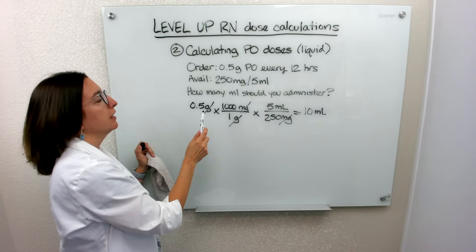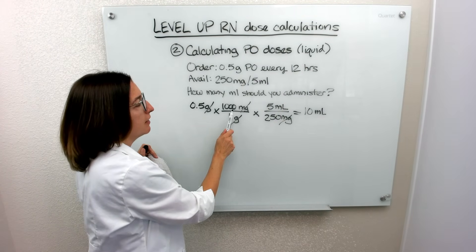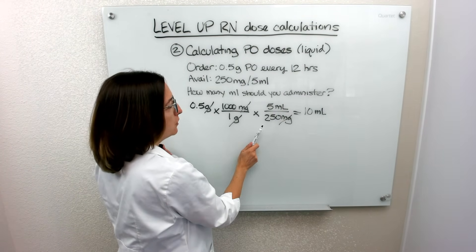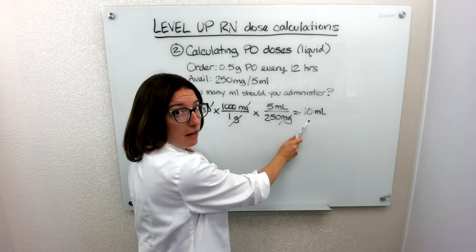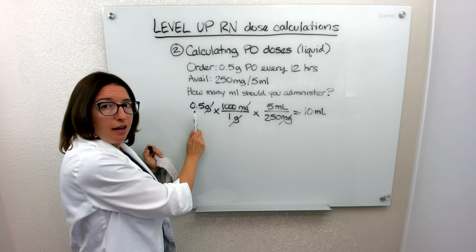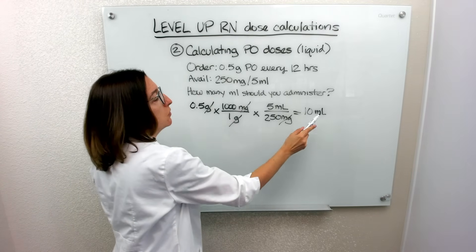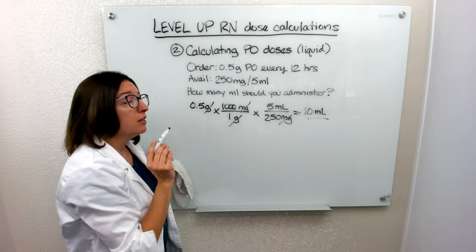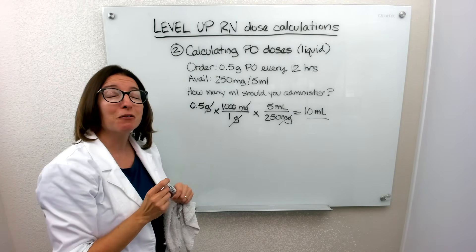You can do this with your calculator: multiply 0.5 times 1,000 times 5, divide by 250, and that gives you 10 milliliters. So again, I'm starting with the ordered dose and just doing conversions to get to the unit of measure that is asked for in the problem. That is problem two — we'll pick it up with problem three next.